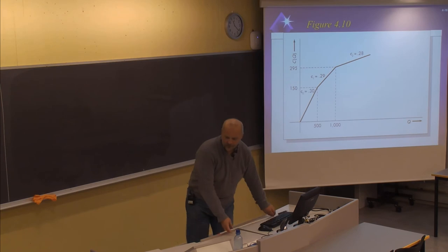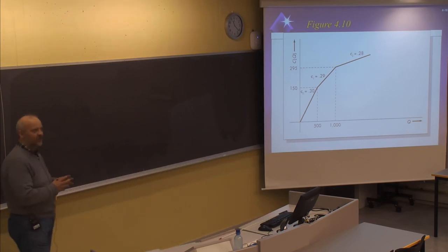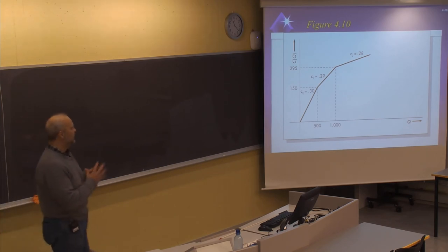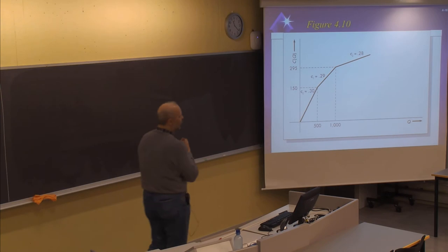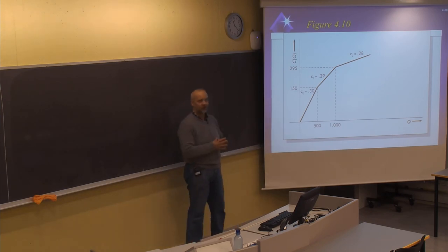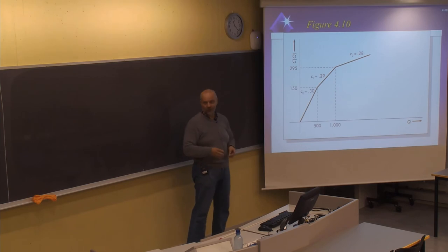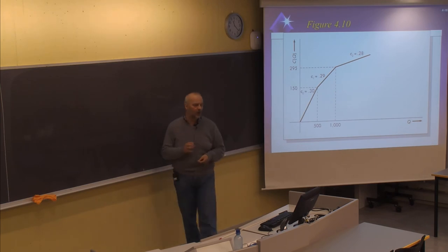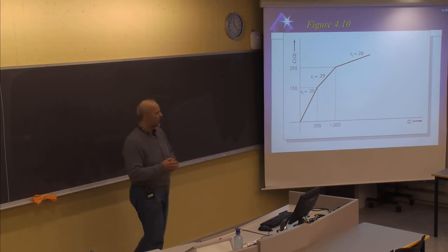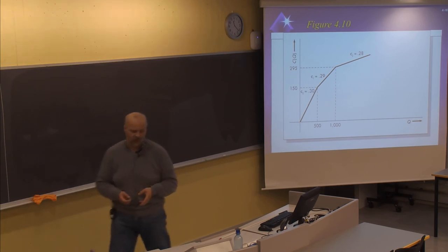Let's now have a look at this type of discount. It's a bit more complex to find the optimal order size here, because the unit price will be dependent on the order size. When we use the all-unit discount, we knew that if we ordered more than the breakpoint, we get a new unit price which could be used directly in the formulas. But now the unit price depends on the size of the order, so we need to do some more complex calculations.